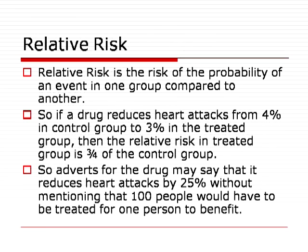Relative risk is the risk or probability of an event in one group compared to another. Taking the same example — if a drug reduces heart attacks from 4% in the control group to 3% in the treated group, then the relative risk in the treated group is three quarters of the control group. So adverts for the drug may say that it reduces heart attacks by 25%, without mentioning that 100 people would have to be treated for one person to benefit.